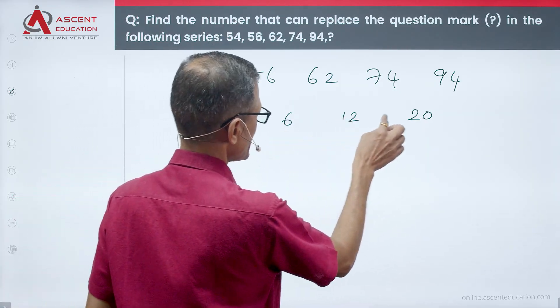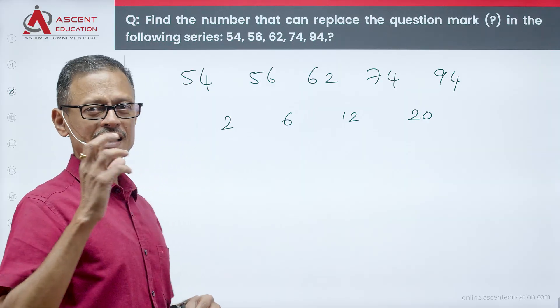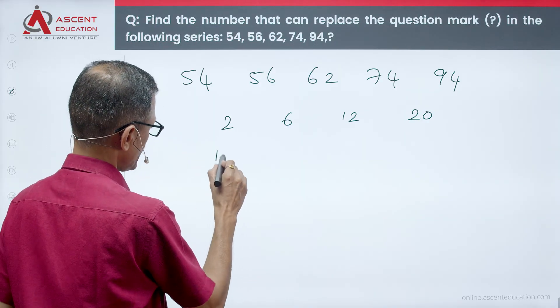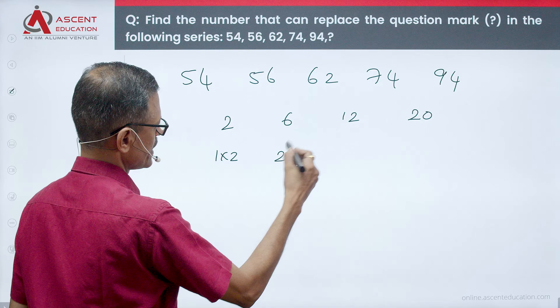If you want to see these 2, 6, 12, 20, this is basically 1 into 2, this is 2 into 3, 3 into 4, 4 into 5.